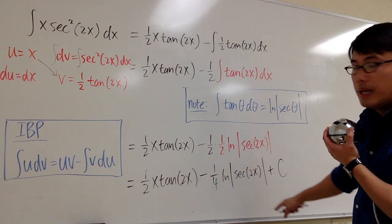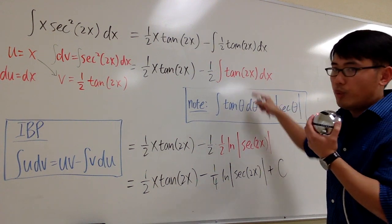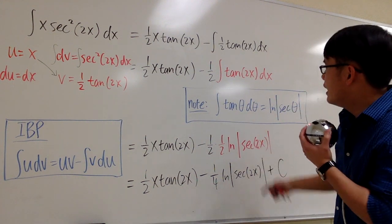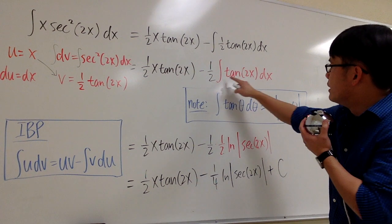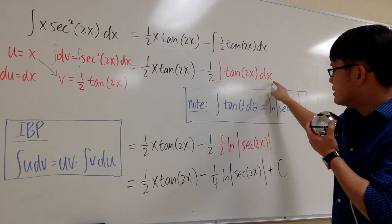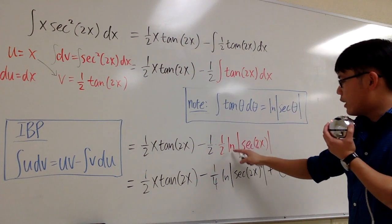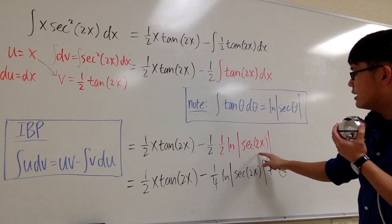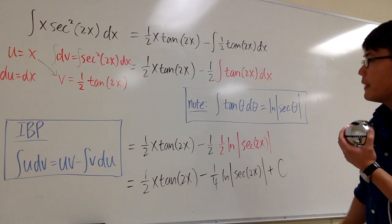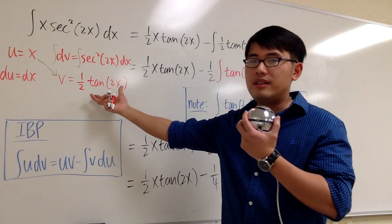So you can see we have ln of secant 2x. That's this part. But then because the inside is 2x, we will have to divide it by 2. That's why the integral tangent of 2x dx is 1 half ln absolute value secant of 2x. And the idea is pretty much how I did this one right here.